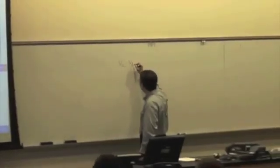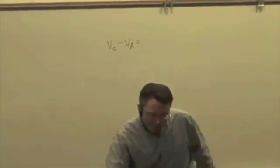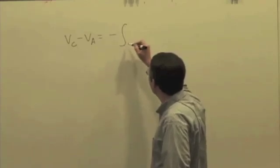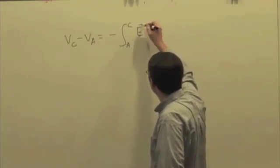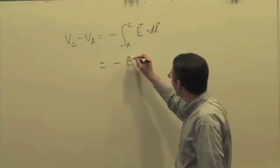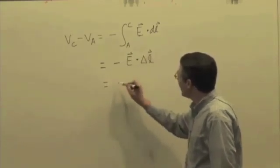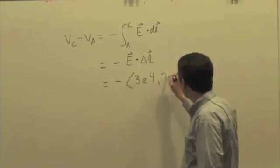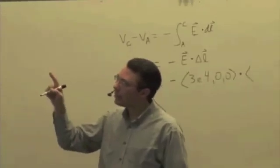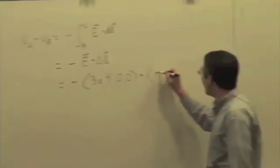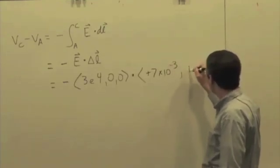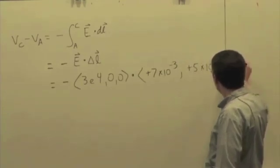So we have Vc minus Va, and the most exact definition is the integral of negative E dot dL, in this case from A to C. But the electric field is uniform here, so this boils down to just negative E dot delta L. So you have negative 3 times 10 to the 4th, 0, 0, dotted with a path going from A to C, which has an X component of positive 7 times 10 to the minus 3 meters, and a Y component of positive 5 times 10 to the minus 3 meters, comma 0.